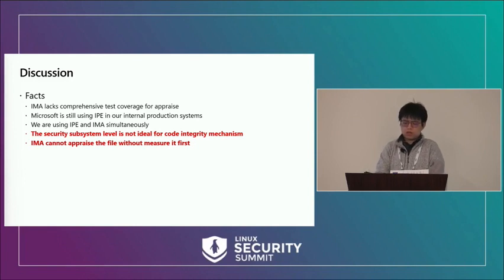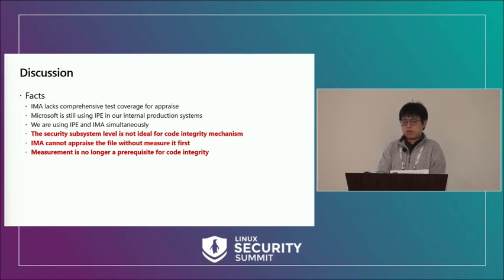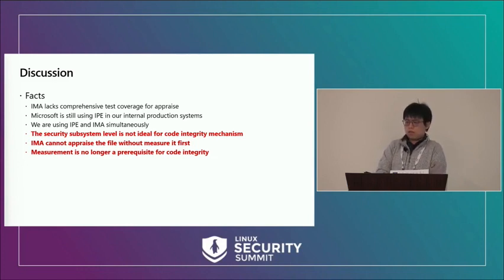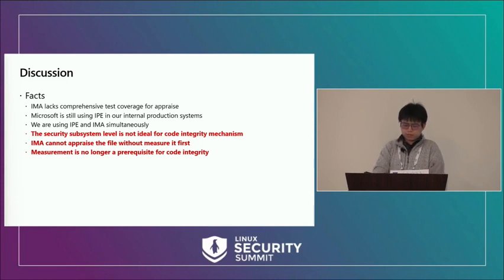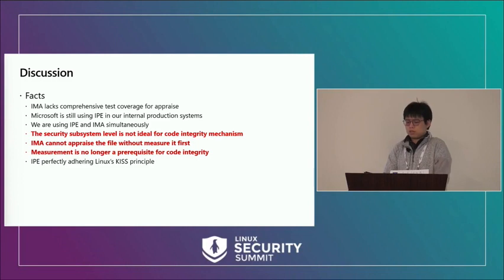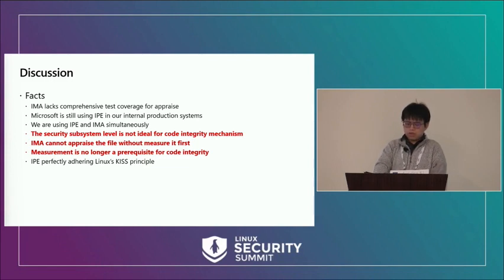The original design of IMA is built on top of the measure action, which calculates the file hash before appraisal — meaning IMA has to do measurement before appraise every time. However, measurement is no longer a prerequisite for code integrity, as proved by IPE: we do nothing related to measurement but still guarantee system-wide code integrity. Moreover, if IPE and IMA are both enabled via LSM stacking, if IPE denies a file, IMA's measurement hook won't be triggered, avoiding useless measurement actions. IPE perfectly adheres to the Linux KISS principle — do one thing (code integrity) and do it well. Measurement and code integrity can be totally separate kernel modules, and we think they should operate separately.